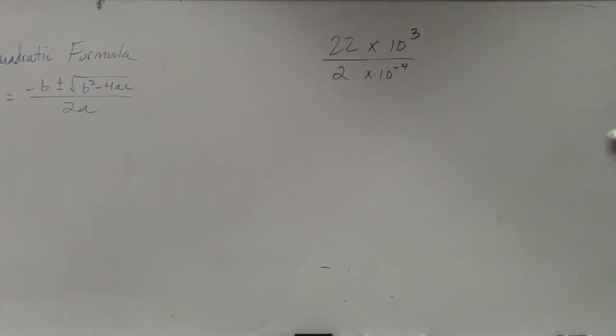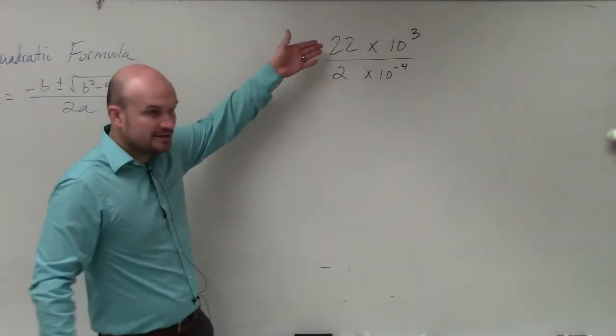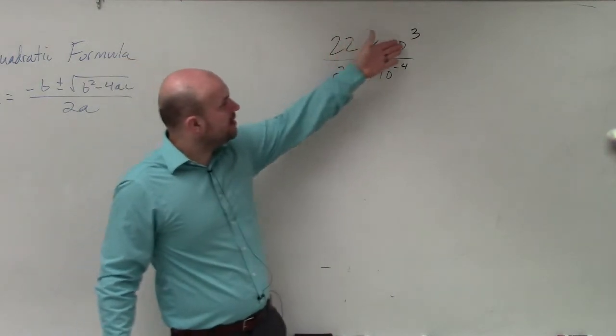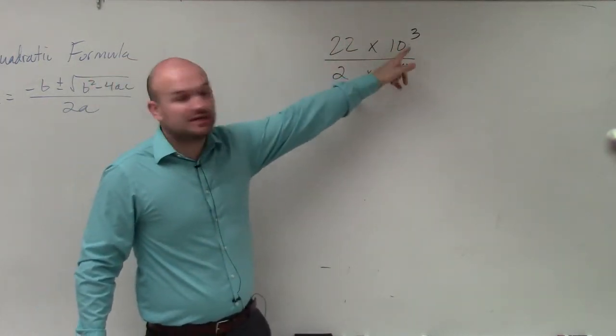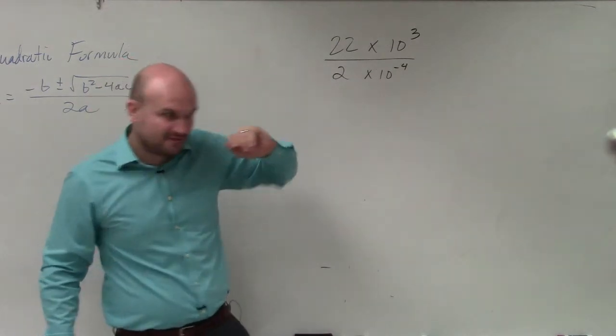The same thing, just like multiplication, you're simply going to divide your real terms, and then divide your numbers here, 22 and 11. And then you're going to divide 10 to the third divided by 10 to the fourth.